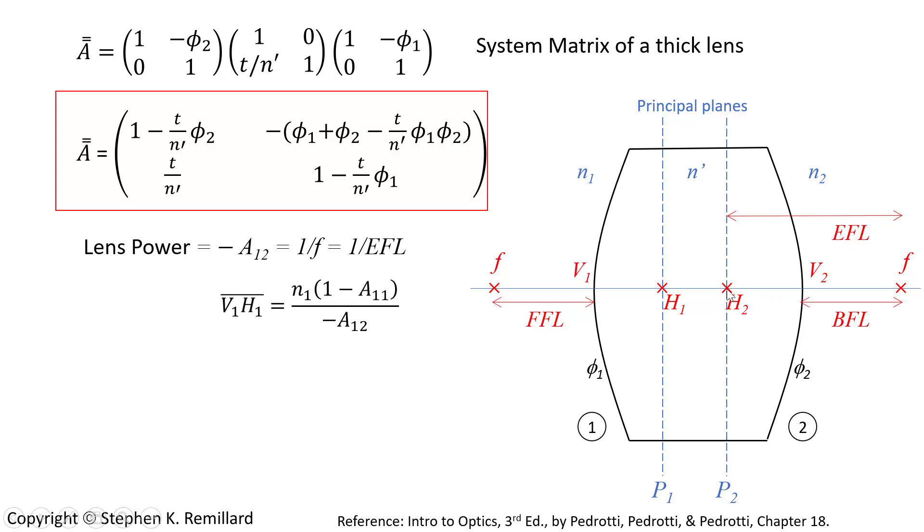You can flesh out other points in this lens using this matrix. We can talk about the distance between the principal plane and the vertex. That can be calculated from entries in the system matrix. And this comes out of chapter 18 in Pedrotti, Pedrotti, and Pedrotti, where this is worked out in very thorough detail using a different language than I'm presenting it in here. English, but a different matrix language.